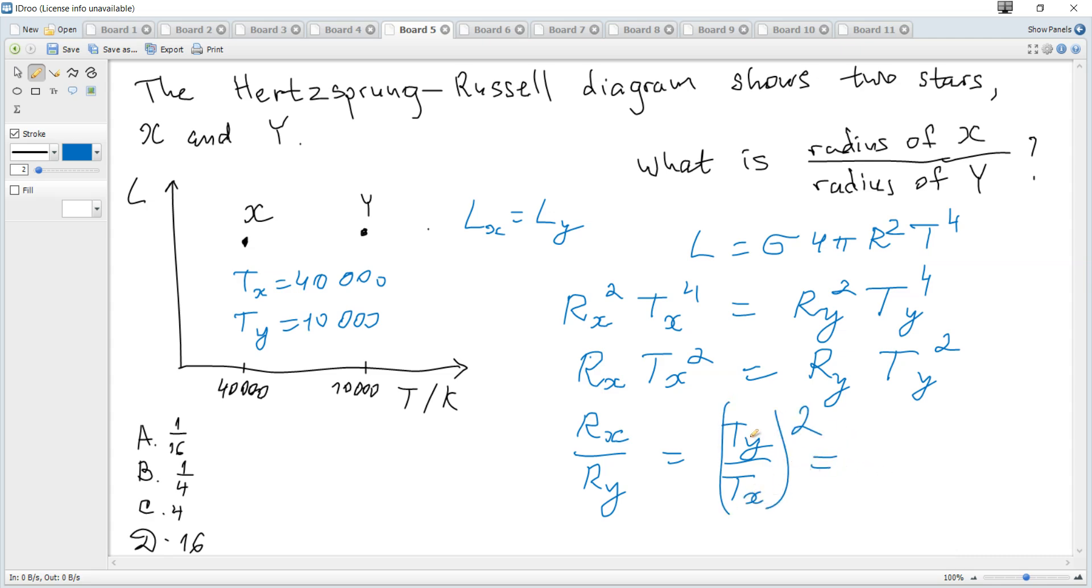Ty over Tx is 1 over 4, and squared is 1 over 16.